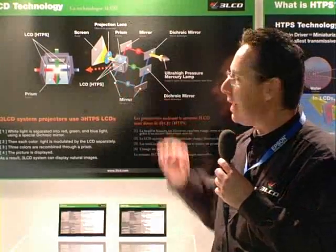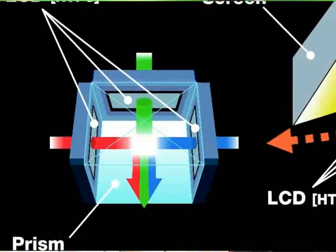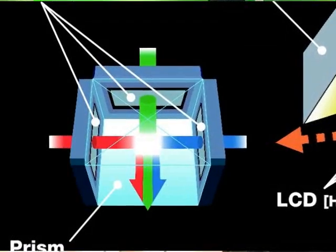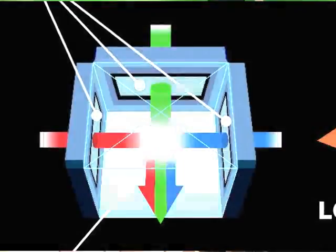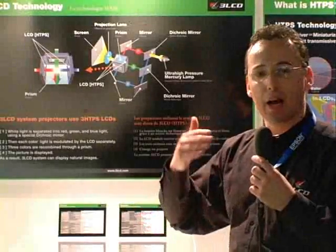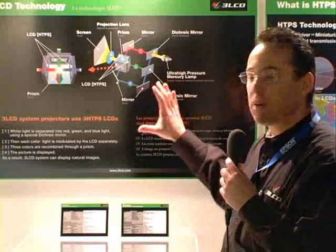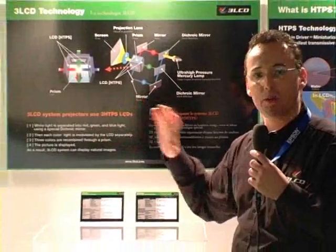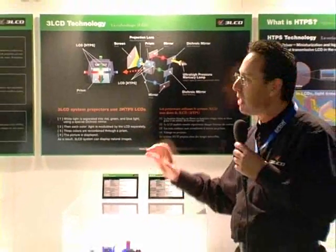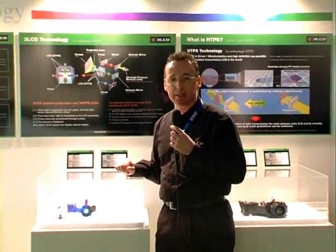The fact that the projection lens continuously projects out full color images rather than red, green and blue images sequentially — one by one — means there are no motion artifacts whatsoever, like color breakup, so-called rainbow effects. So the image overall is very bright, very natural, with very crisp colors, as you can see when you look at a 3LCD-based projector, and it's very easy and gentle on the eyes.